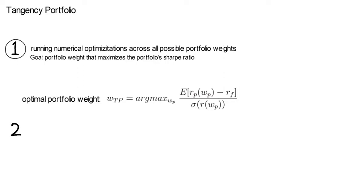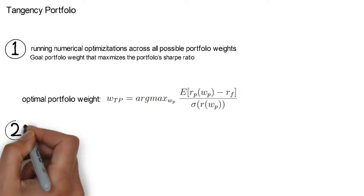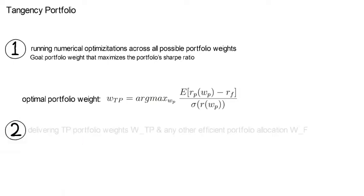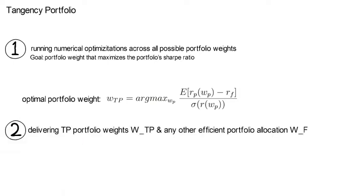I also like the upcoming second approach as it gives us not only the portfolio weights of the tangency portfolio Wtp, but it also gives us any other efficient portfolio allocation Wf. Now, that's the approach that is often used in financial software, which displays the efficient frontier.